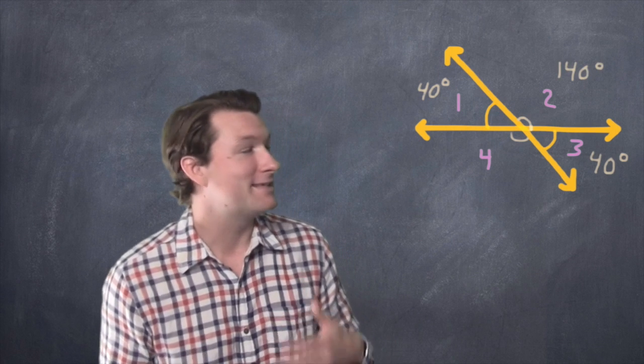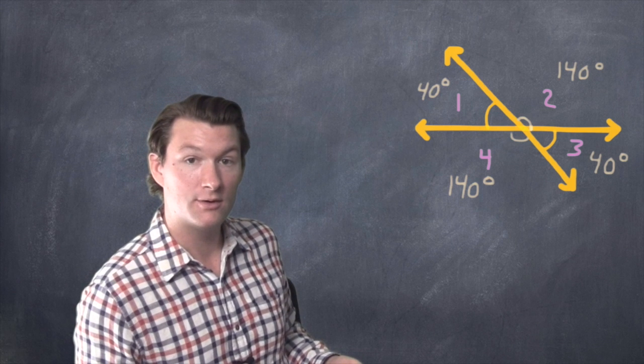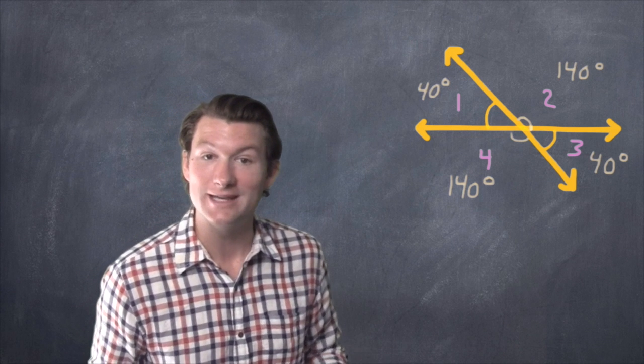Angle 3 is also 40 degrees, because vertical angles are equal. What if angle, let's say angle 2 is 140 degrees. How much is angle 4? 140 degrees, because vertical angles are equal.